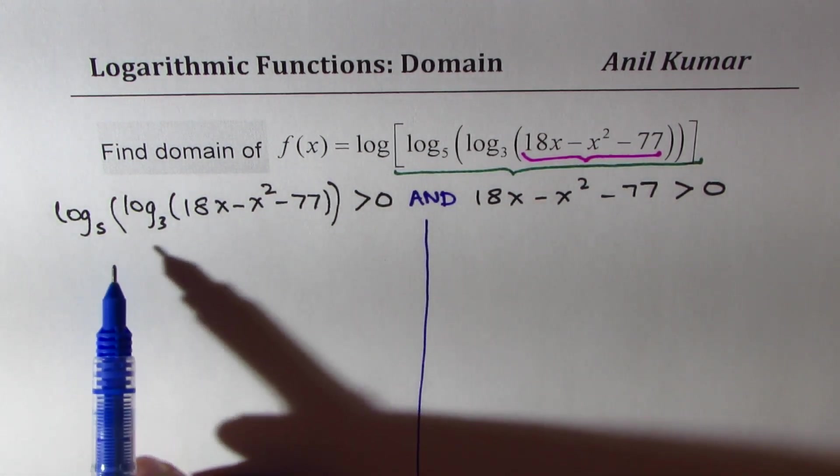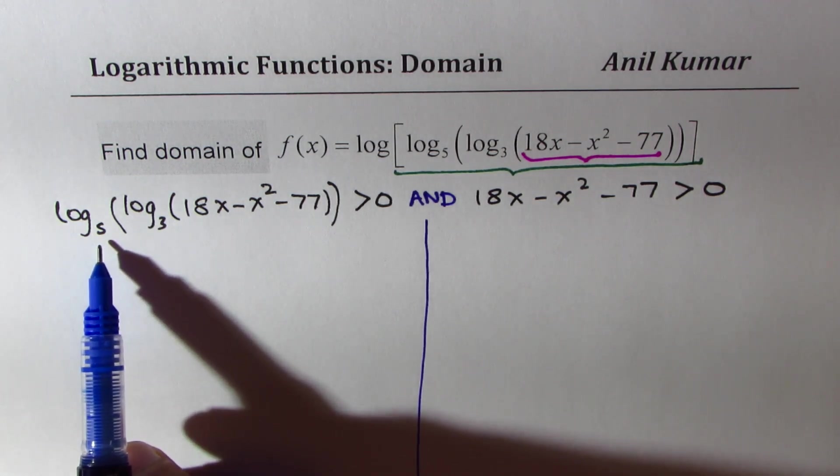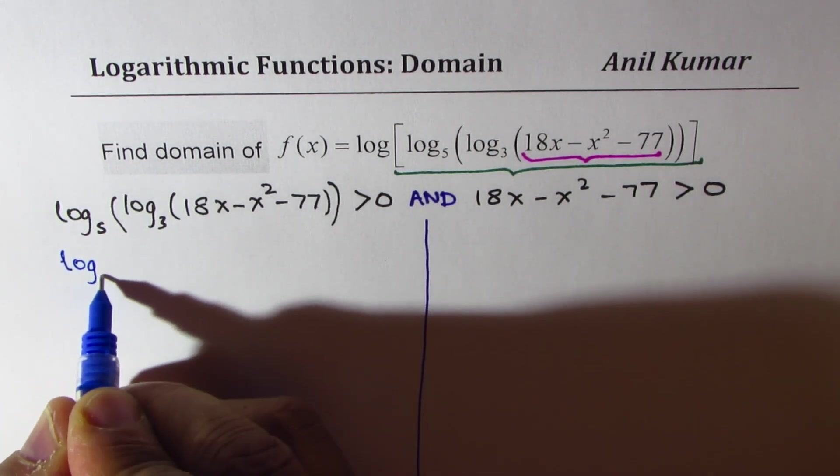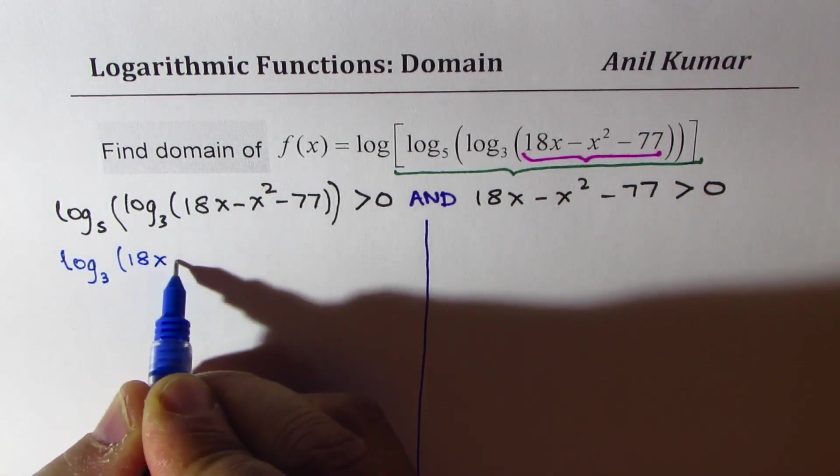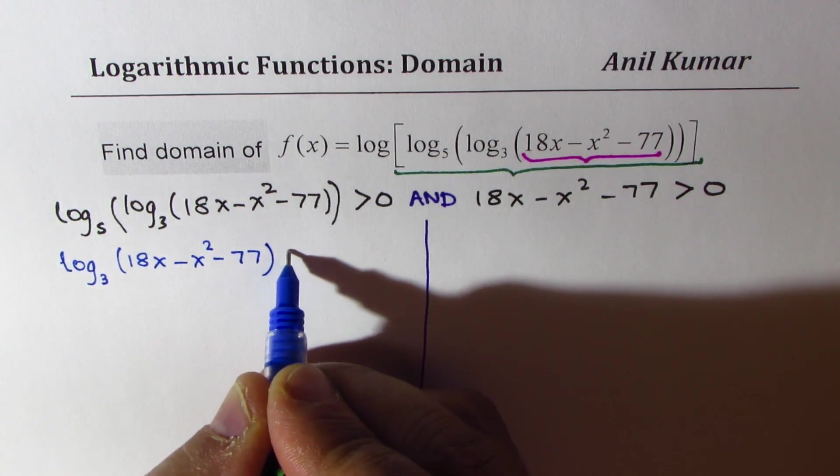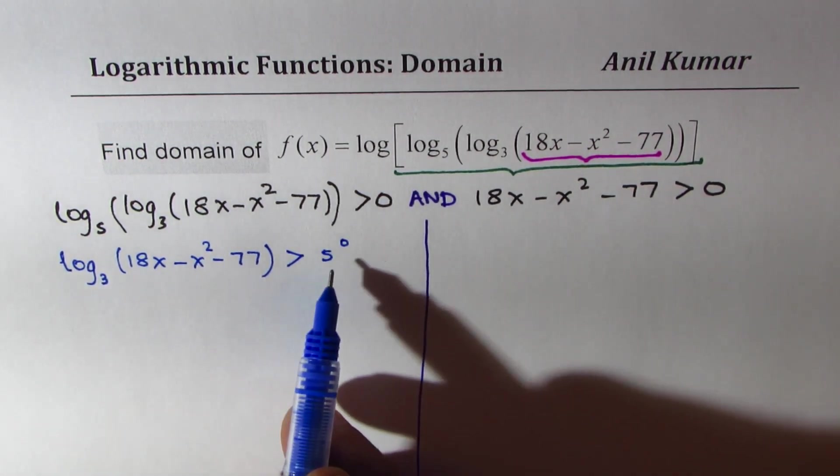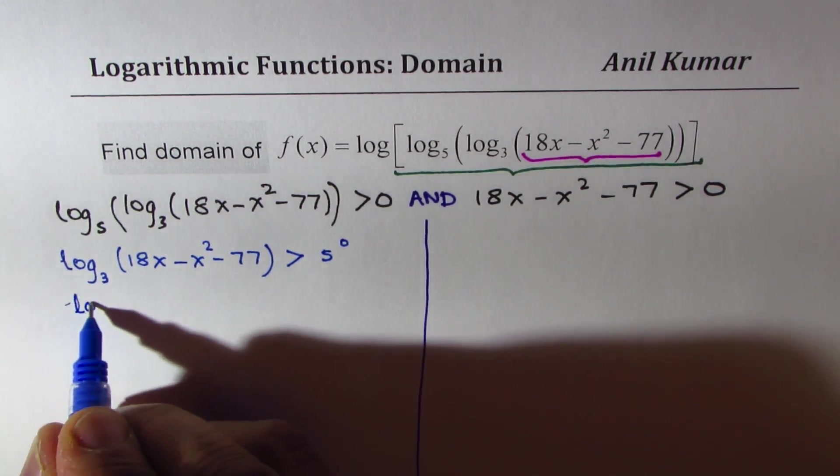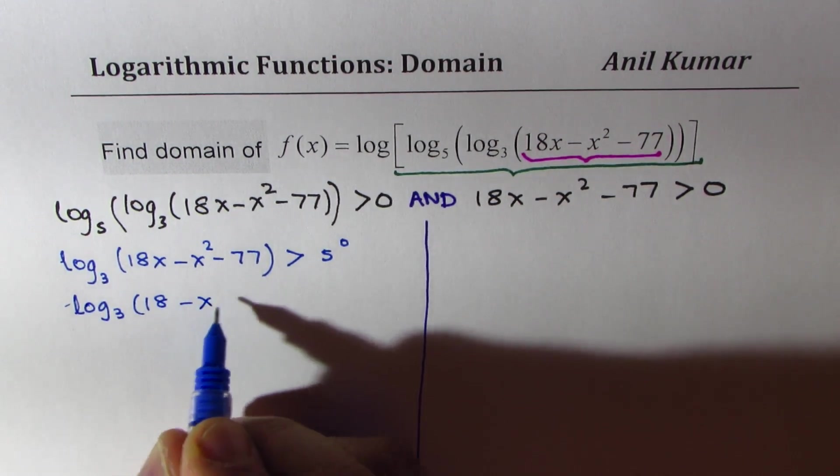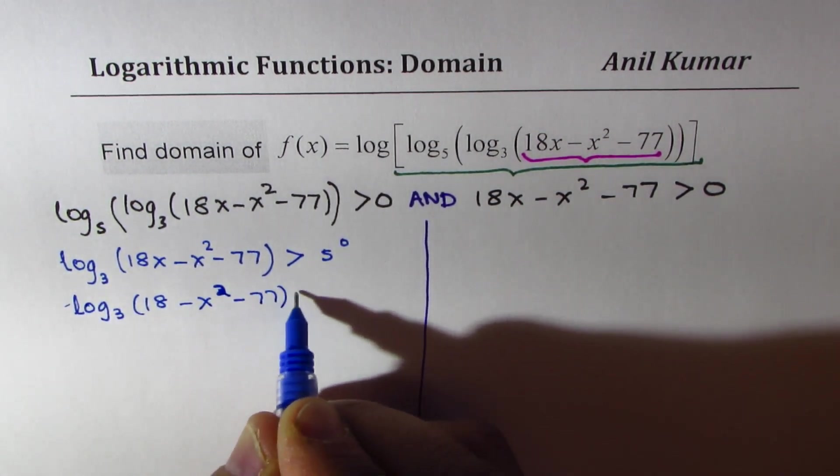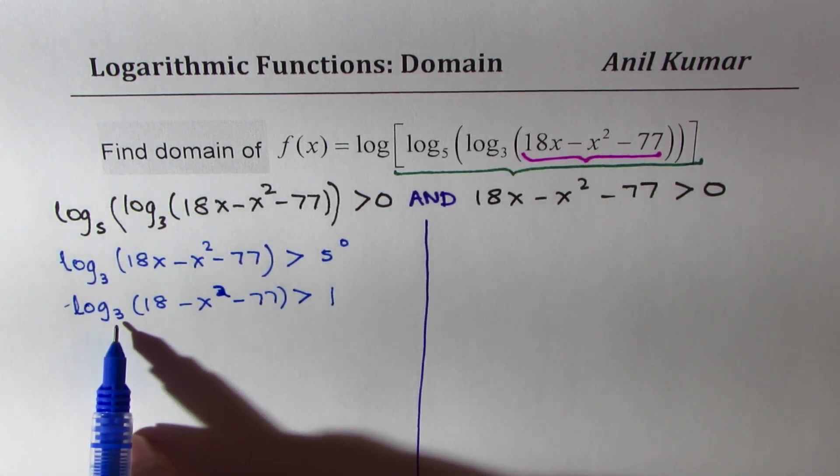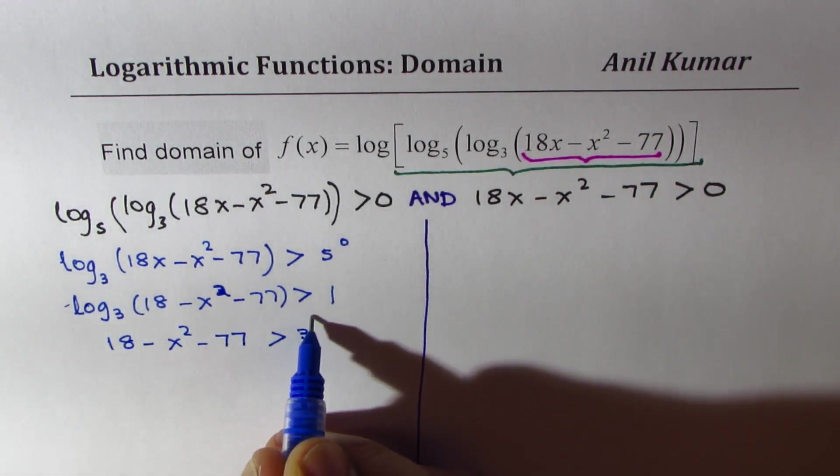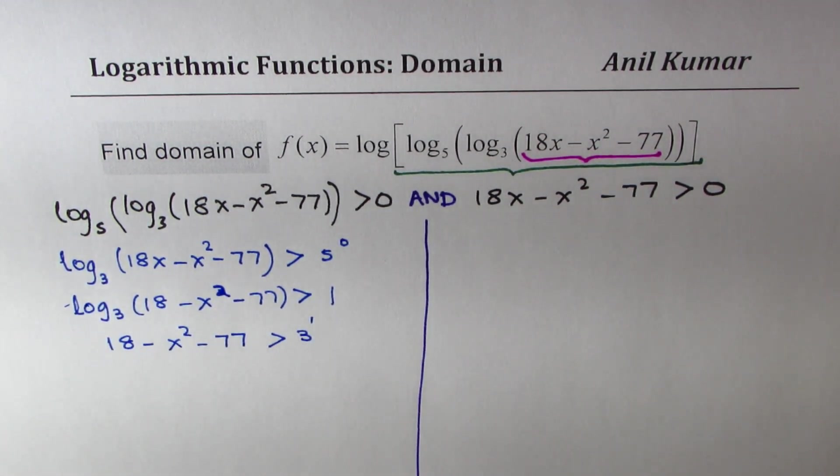Let's begin with the left side. Converting log base 5 to exponential form, we write it as 5^0. So log base 3 of (18x - x² - 77) should be greater than 5^0, which is 1. Again using exponential form, we get 18x - x² - 77 should be greater than 3^1, which is 3.